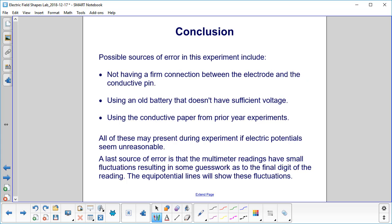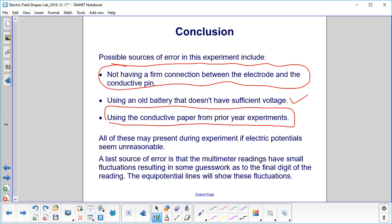Possible sources of error. Here's the big one: not having firm connections between the electrodes and the conductive pin. You could also be using an old battery, but you should have tested that in the beginning with the multimeter. And you may not be able to use the conductive paper from last year's experiments.